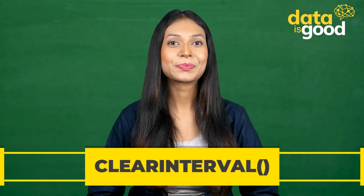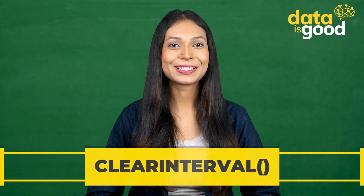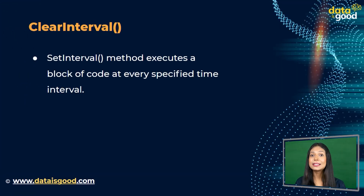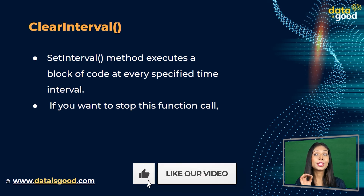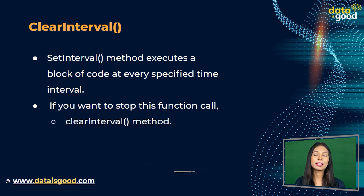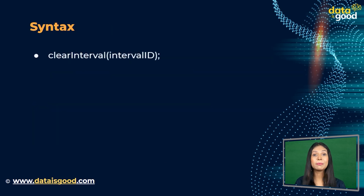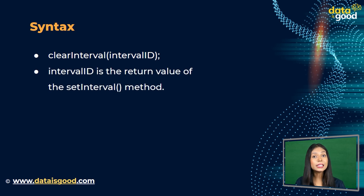There is another concept called clearInterval, which works just like clearTimeout. The clearInterval method stops the execution started by setInterval. If you want to stop the repeated function call, you can use clearInterval. The syntax is: clearInterval(intervalId), where the interval ID is the return value of the setInterval method.